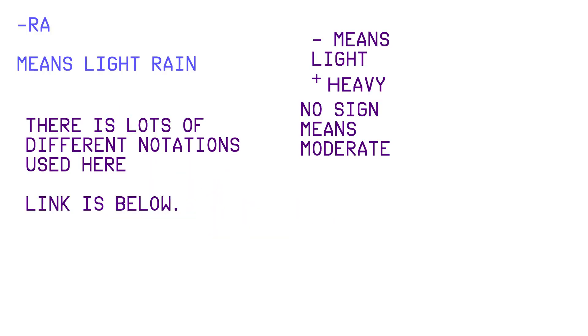Visibility 9999 means unlimited. Negative RA means light rain — RA means rain, a negative prefix means light, a positive prefix means heavy, and no sign means moderate. There are a lot of different weather notations; I will put a link below for snow, hail, or even volcanic ash.